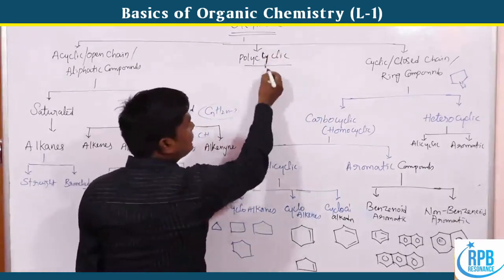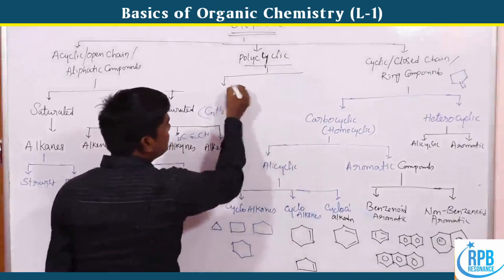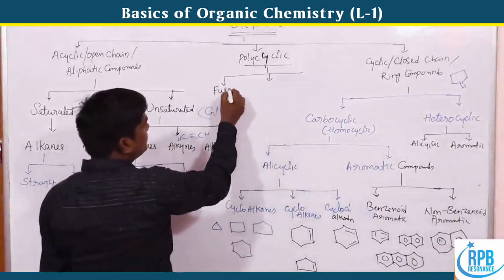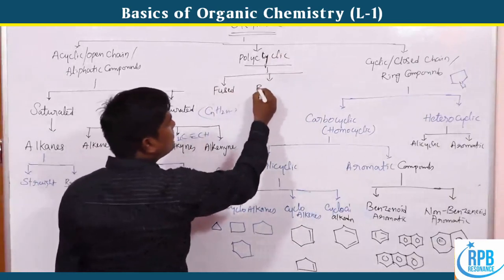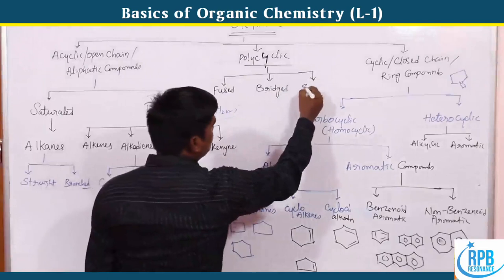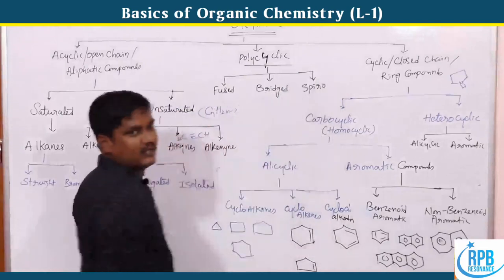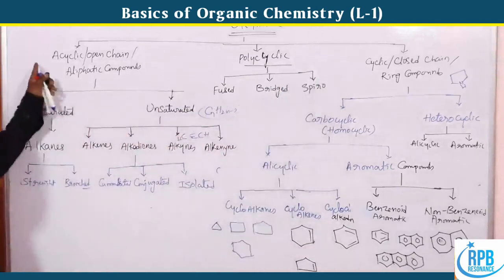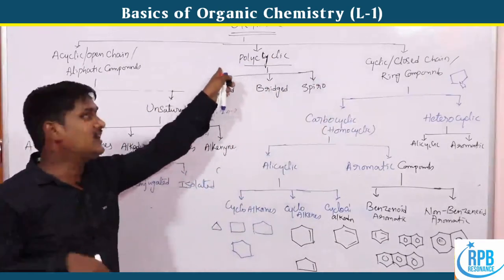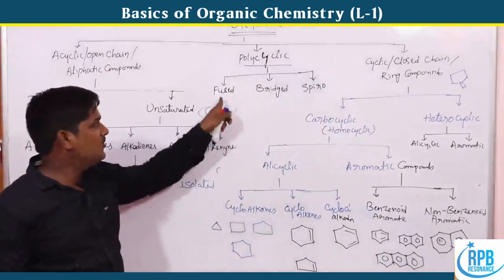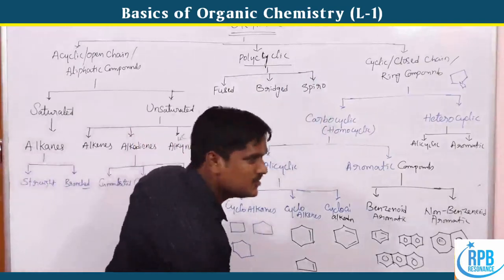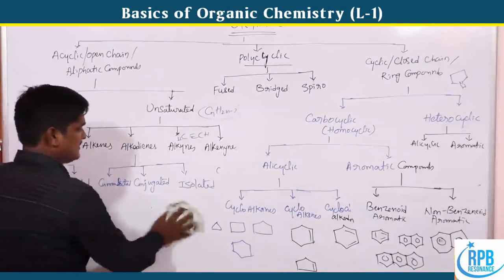Polycyclic compounds are of three types: fused cyclic compounds, bridged cyclic compounds, and spiro compounds.